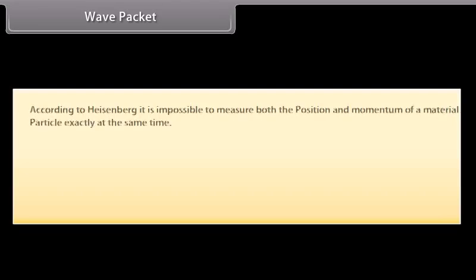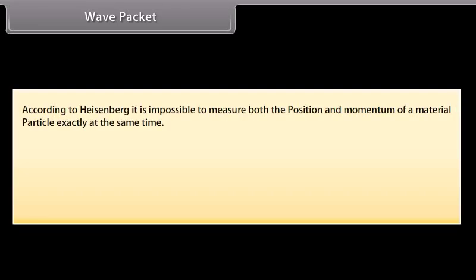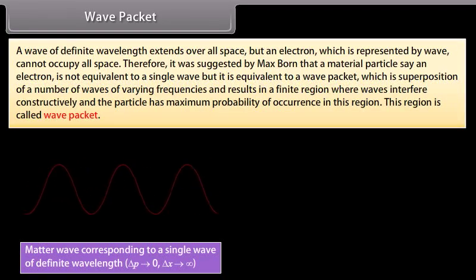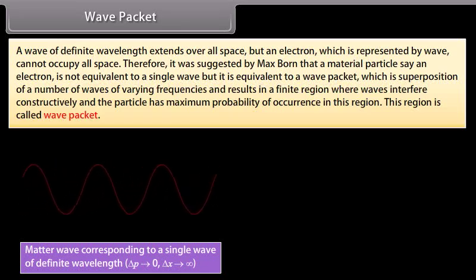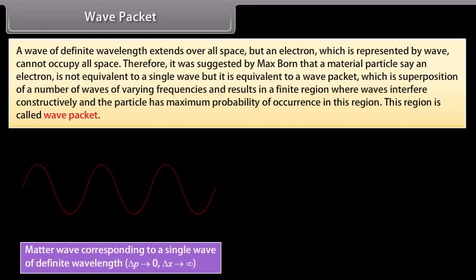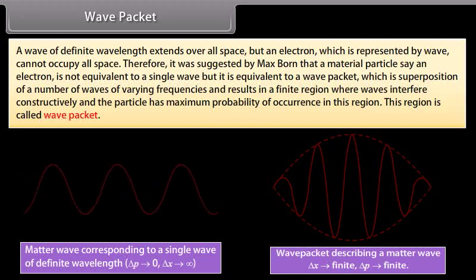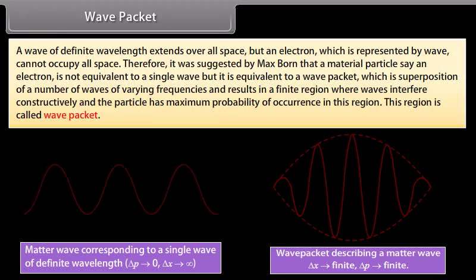Heisenberg's Uncertainty Principle states that it is impossible to measure both the position and momentum of a material particle exactly at the same time. The product of uncertainties in simultaneous determination of position delta-x and momentum delta-p is of the order of h-bar, where h-bar = h/2-pi: delta-x × delta-p ≈ h-bar. A wave of definite wavelength extends over all space, but an electron cannot occupy all space. Max Born suggested that a material particle such as an electron is not equivalent to a single wave but to a wave packet - a superposition of waves of varying frequencies resulting in a finite region where waves interfere constructively - and the particle has maximum probability of occurrence in this region.